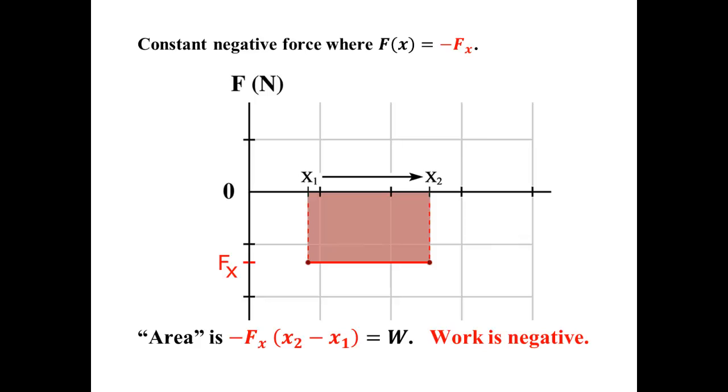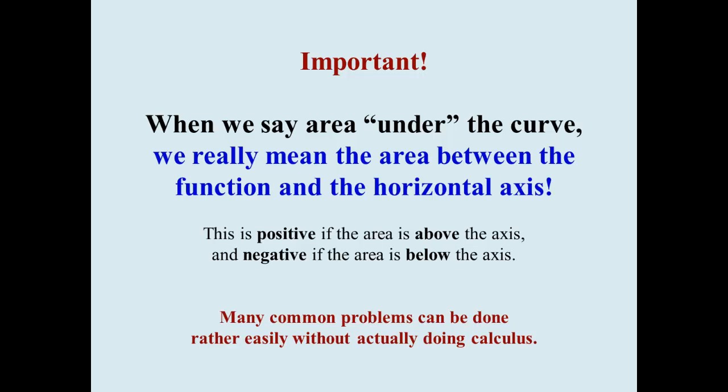It's, of course, not a real area, but it is a real actual result. That negative area represents negative work, which, when it's friction, slows you down. It decreases your kinetic energy. So the important thing is, when you hear someone say area under the curve, they don't necessarily mean all the way under it. What they mean is the area between the function and the horizontal axis. That area is positive if the area is above the axis, negative if it's below the axis.